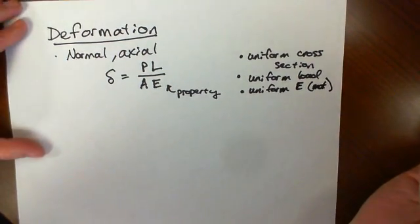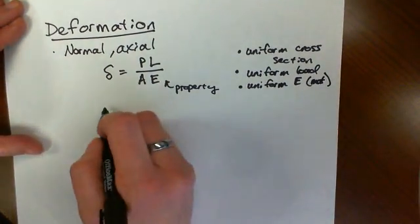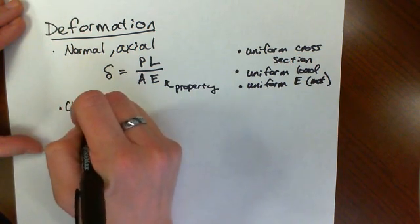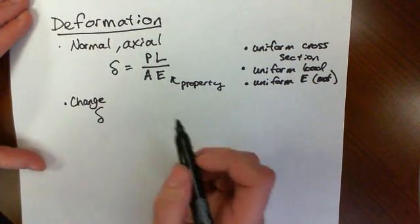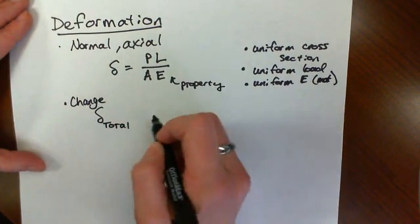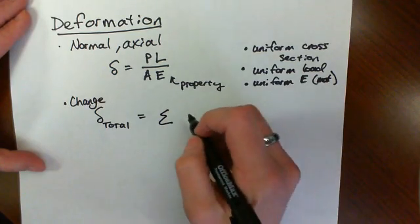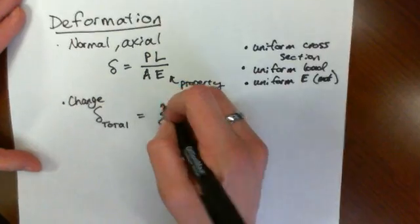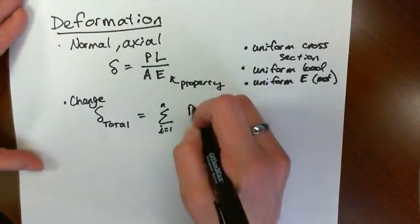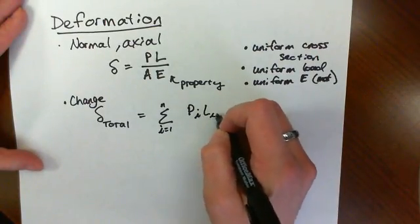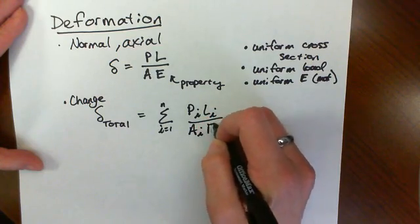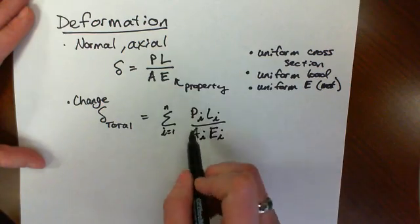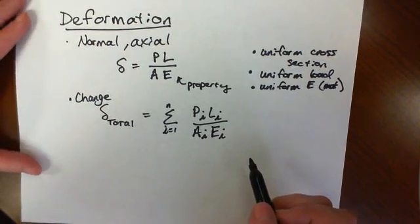If any of these things change, we have to use that our overall deformation is going to be the sum of all of our little deformations. So if we have any one of these changing across the cross-section, we have to do something different.